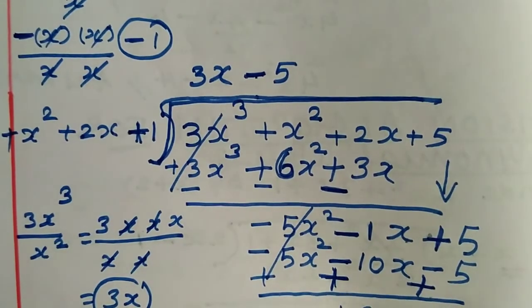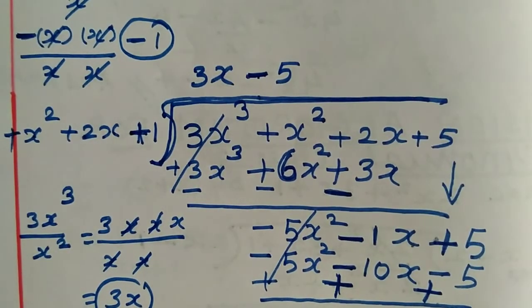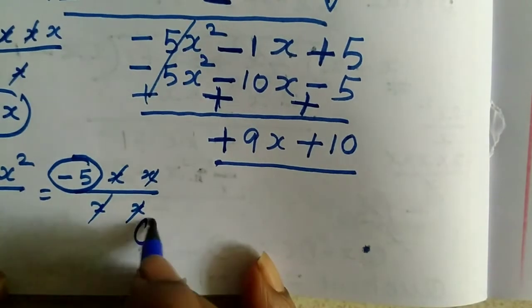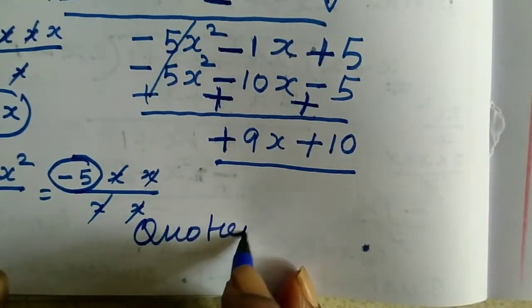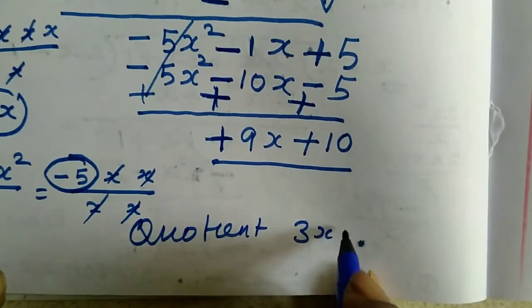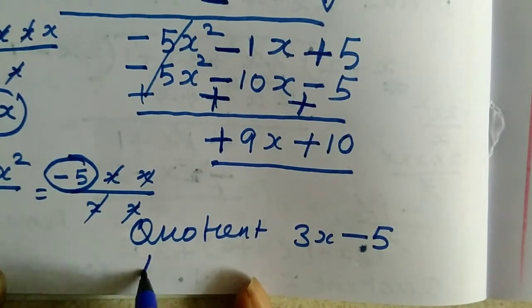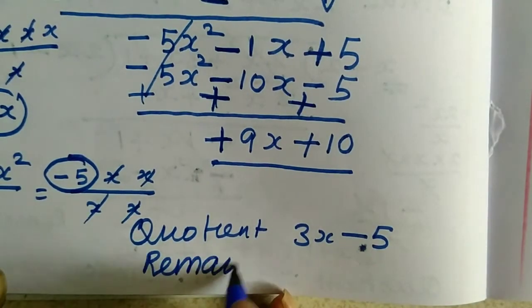So the quotient is 3x - 5, and the remainder is +9x + 10.